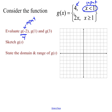For g of one, which piece do I use — top or bottom? When x is one, I use the bottom piece: 2 times my x-coordinate. Two times one gives me two. For g of three, three is bigger than one, so I use the same piece: 2 times three equals six.